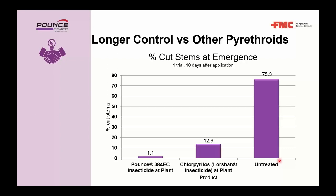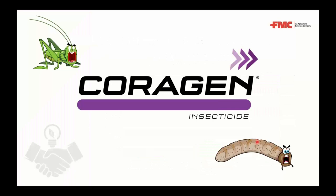A study highlighted the longer cutworm control from Pounce's light stability. Pounce was applied at canola planting and the percentage of cut stems was measured 10 days later as canola emerged. Pounce had only 1.1% cut stems, chlorpyrifos was 13%, and the untreated was 75%. Pounce clearly had the least amount of cut stems versus chlorpyrifos-type products and the untreated. Nolan then passed to Rachel to cover Corrigan.